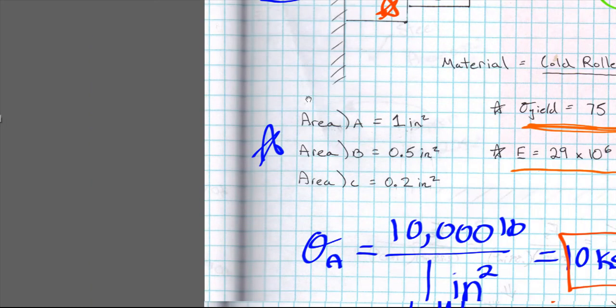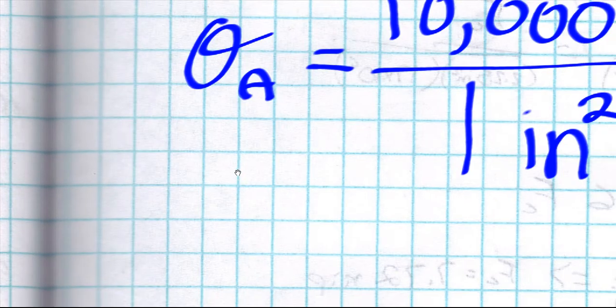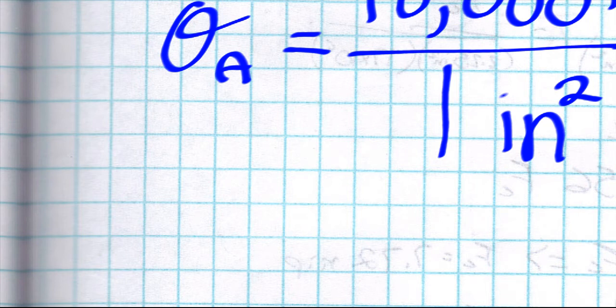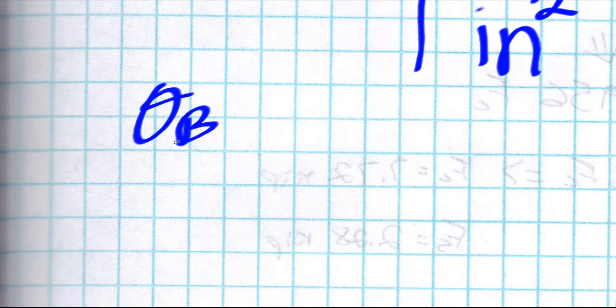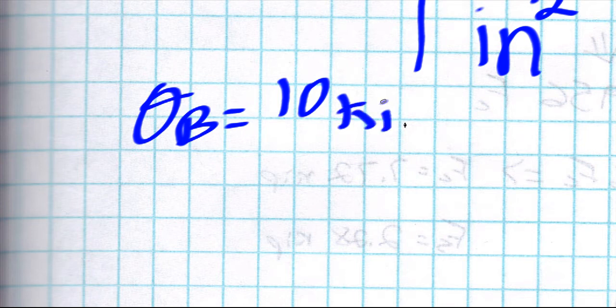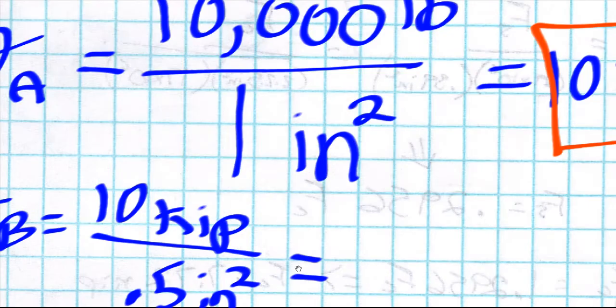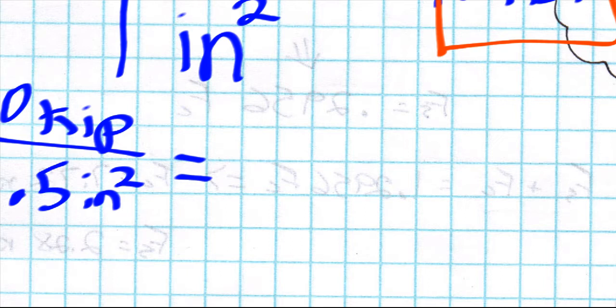So I'm gonna zoom in again, go back to our blue. The stress of B is going to equal once again 10 kips over 0.5 inches squared, which is simple enough, simple math, just twice our 10 ksi, which is going to be 20 ksi.